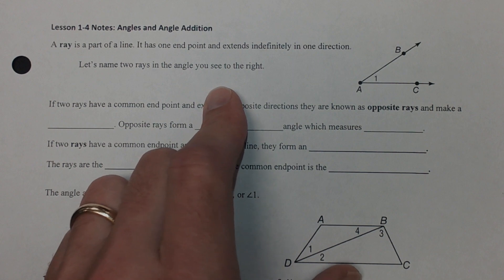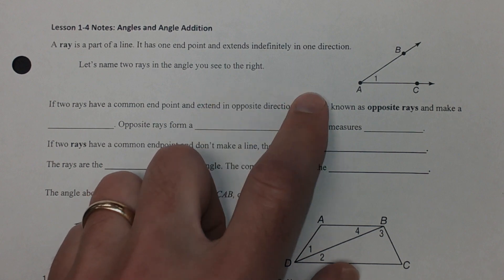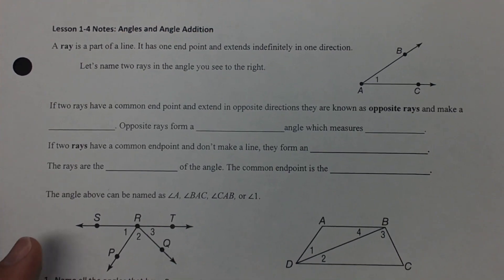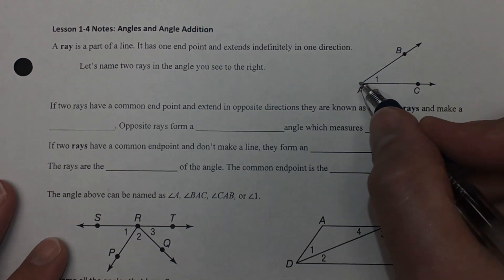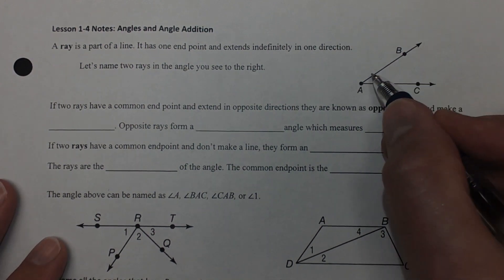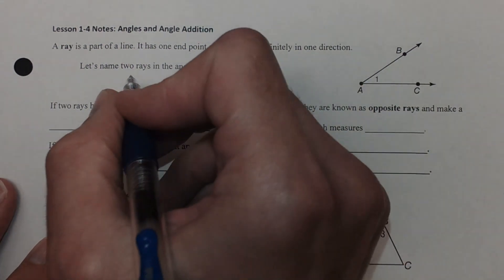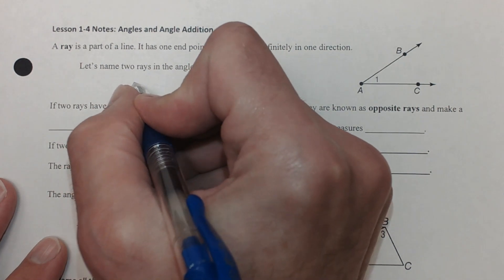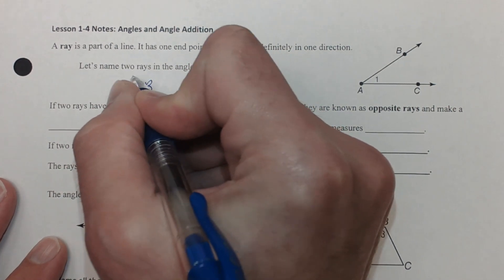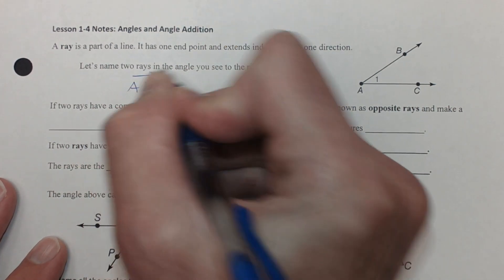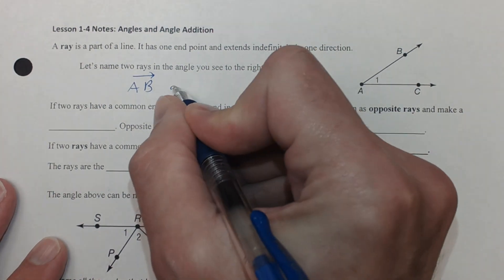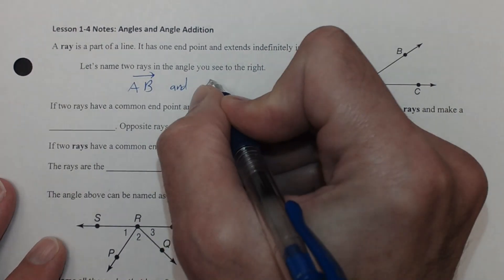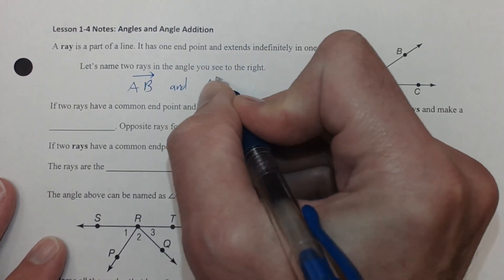Let's name two rays in this angle that you see to your right. One of the rays is going to be right here — it has the endpoint A and it extends in the B direction, so we're going to call that ray AB. And the other ray is going to be ray AC.